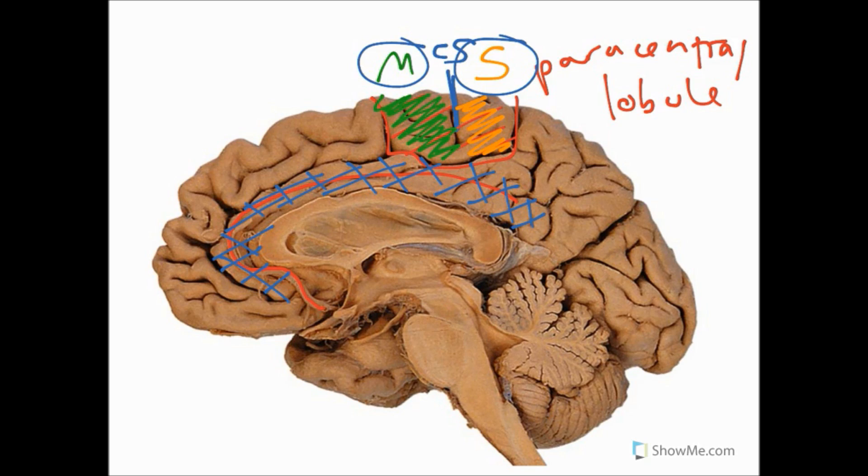So other structures to note just while we're here. This bit here is our corpus callosum. The corpus callosum is a white matter tract that joins the left and right hemispheres together. So it allows for communication between the left and right hemispheres, which is very useful. And then in between, just in here, we have what's known as our septum pellucidum. And our septum pellucidum separates our left and right ventricles.